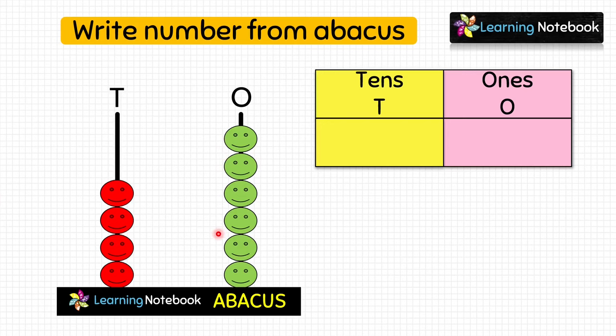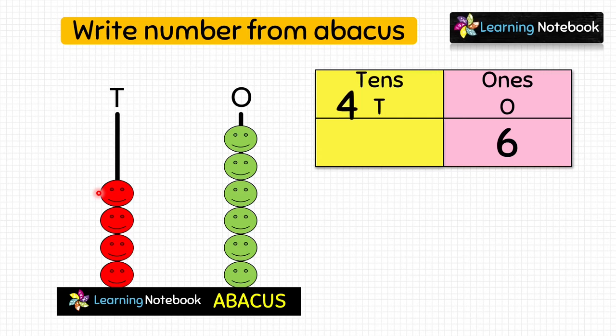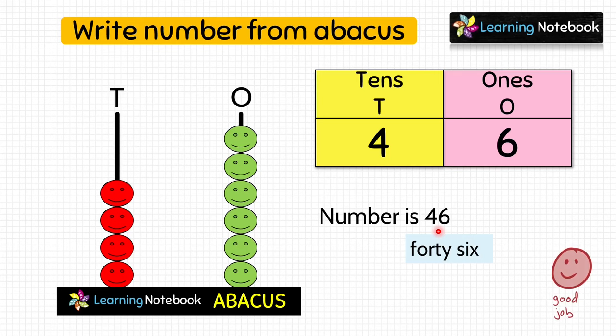Let's do one more question. Again we have to find the number being shown by this abacus. First count the beads at the ones place: 1, 2, 3, 4, 5, 6. So write 6 at the ones place. Next count the beads at the tens place: 1, 2, 3, 4. So write 4 at the tens place. This abacus is showing the number 46.